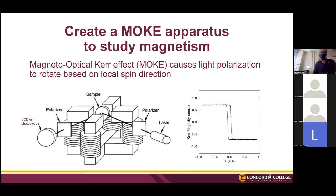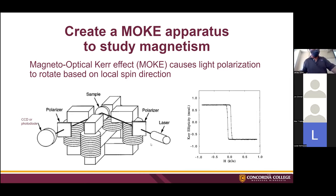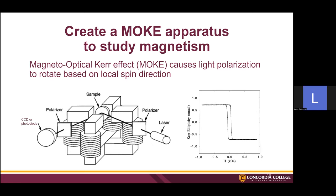All of this is in order to create essentially a permanent magnet MOKE apparatus, where the sample will be in the middle with gaps to allow laser light to go in and reflect off the sample. By measuring the polarization of that laser light, you can glean information about the magnetic domain structure of the material and create hysteresis curves such as the one seen on the right.